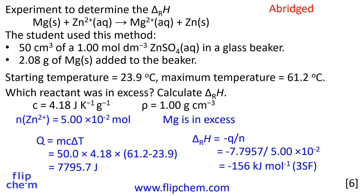The enthalpy change of the reaction is how much energy in kilojoules is transferred per mole of substance. Convert joules to kilojoules by dividing by 1,000. Divide the energy change by the amount of Zn²⁺ ions — remember, this is the limiting factor. ΔrH is minus 156 kilojoules per mole. You must include the minus sign. The solution got hotter — it is an exothermic reaction.